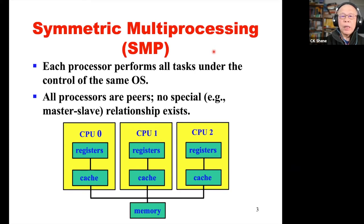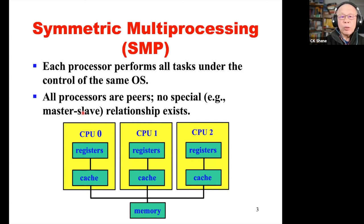In the very early days of multiprocessor systems, there was a concept called master-slave system. We have multiple processors; one of them is assigned the job of the master. The master runs the operating system and assigns computation tasks or input-output operations to the other processors, referred to as the slaves. One of the very well-known systems was the early CDC Cyber 6000 series. CDC here means Control Data Corporation, rather than the Centers for Disease Control.